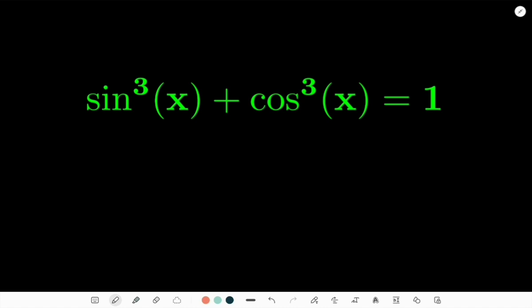What are we going to do? So we assume sin(x) = a and cos(x) = b and this gives me a³ + b³ = 1. But we know we have two variables in one equation. This cannot be solved.